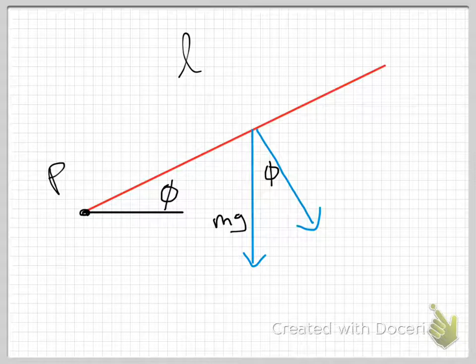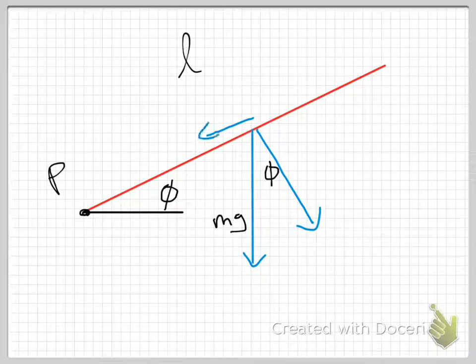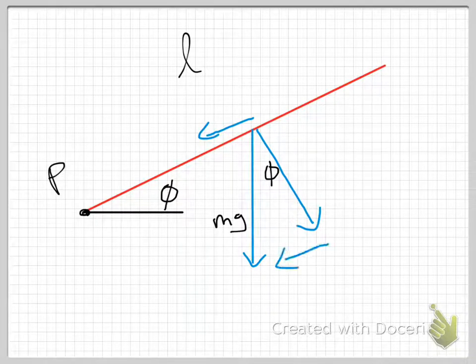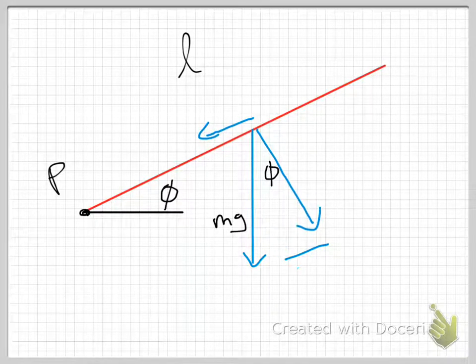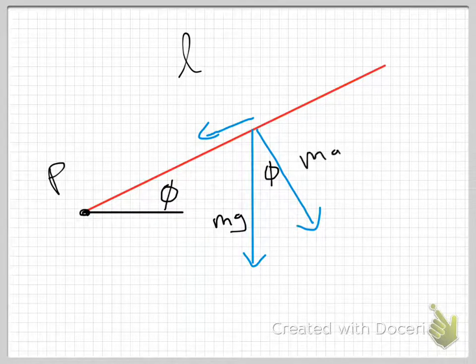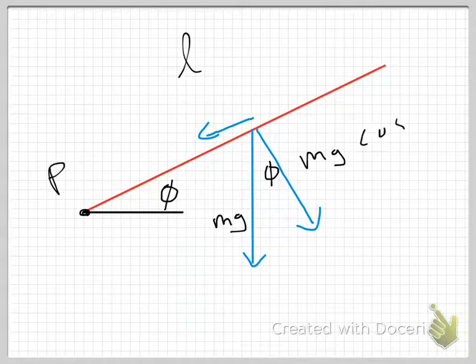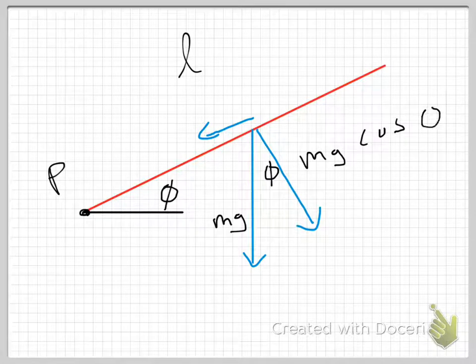So I have the angle phi here, and I have one of the components, and I'm going to draw the other one up here. I could just as easily draw it here, but I like it up there on the rigid object so we can see what's actually going on. So this component is going to be mg cosine of theta, not theta, sorry, cosine of phi.